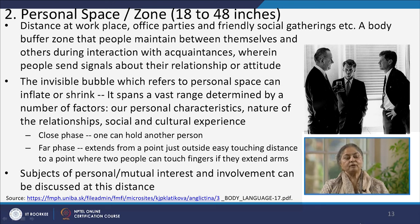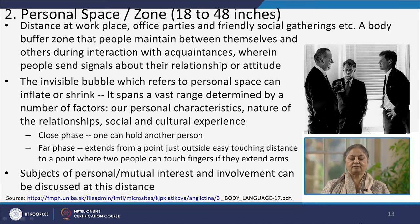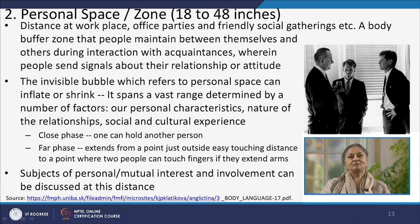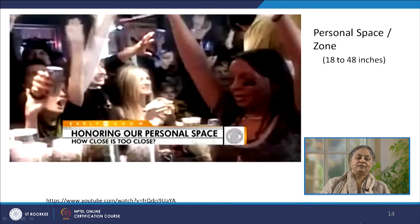In the close phase of personal space, the distance is such that a person can hold or extend their arm to touch another person. The far phase is slightly longer where people may perhaps touch if they extend their arms. This aspect is used in haptics, which will be discussed later. This distance also allows discussing topics of mutual interest.